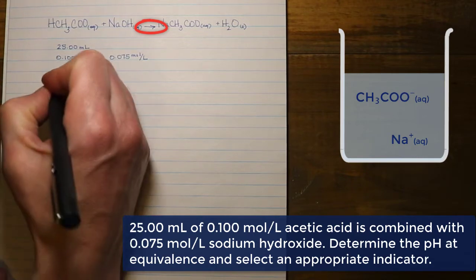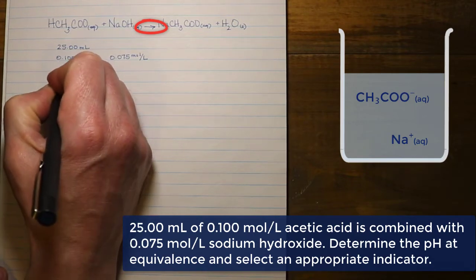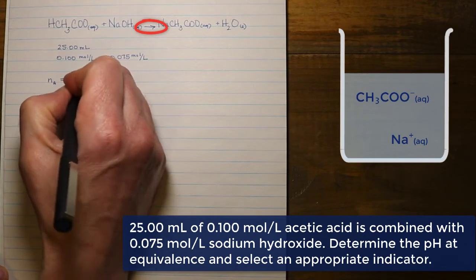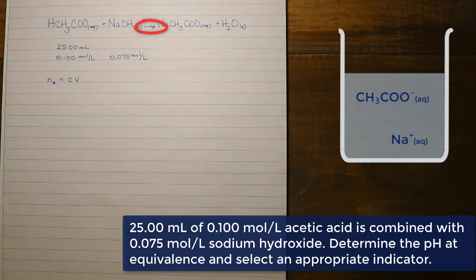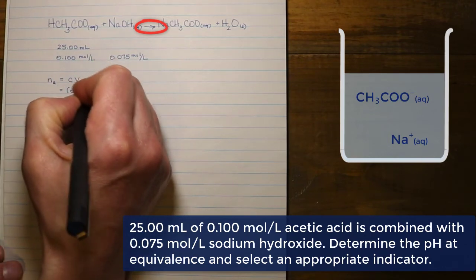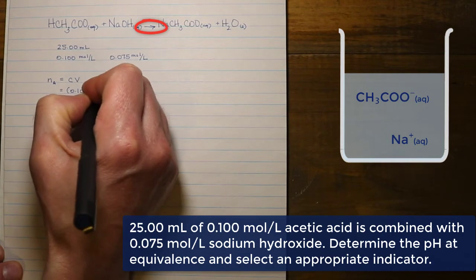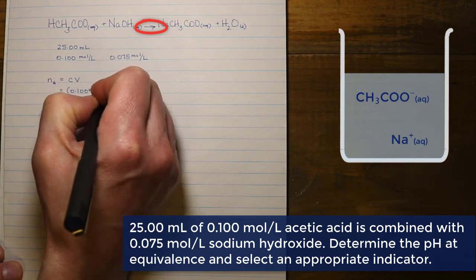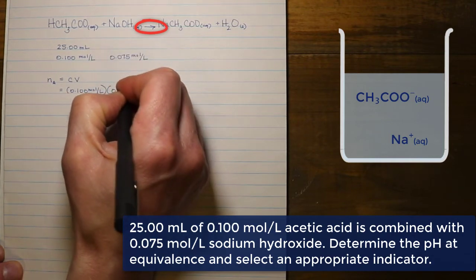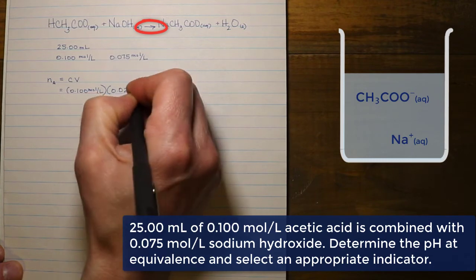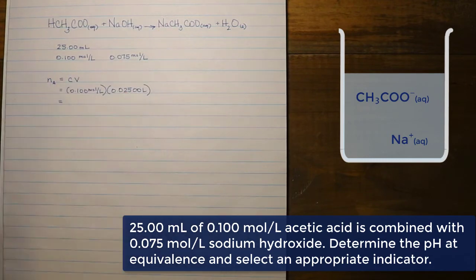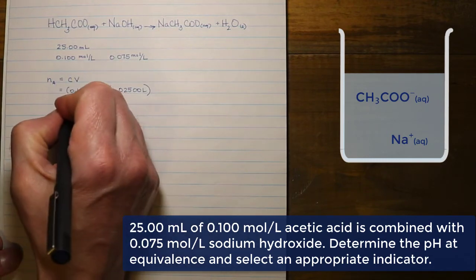The information we can determine for the acid is the number of moles. If we multiply our concentration times our volume, we are going to get a value of 2.50 × 10⁻³ moles of the acid.